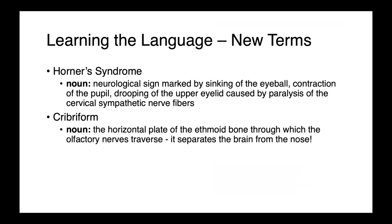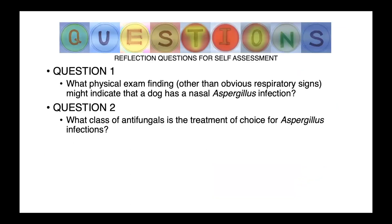Just a couple of new terms today — Horner syndrome and cribriform — and then some questions for self-assessment.